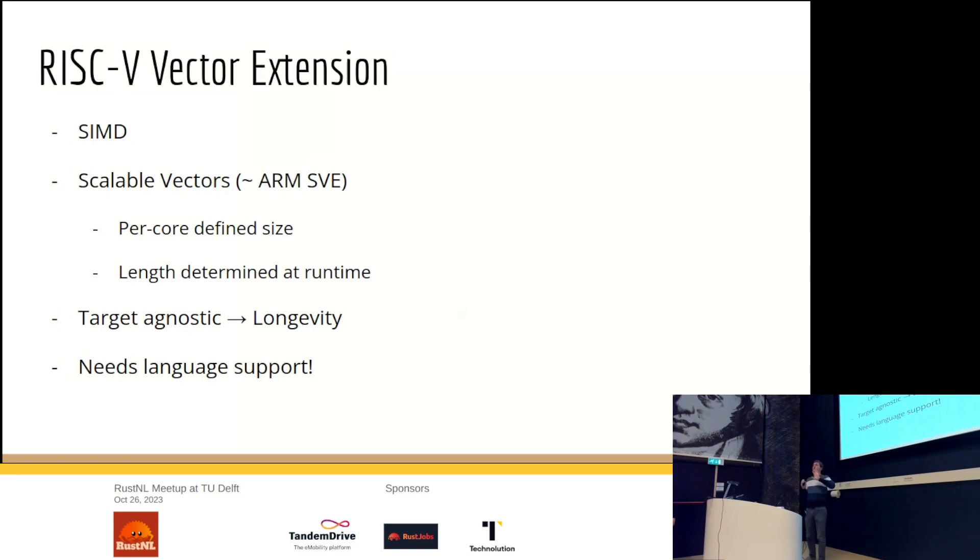So first of all, you can write your code once, and it will run on the embedded chip and on the server chip or the AI accelerator chip. As long as they both have the vector extension, they will run the same code and use the full capacity of that vector register. And this also works over time. So now we might have relatively small vector registers, but in the future, you might have bigger vector registers, and the same code will still work and will still use the maximum capacity.